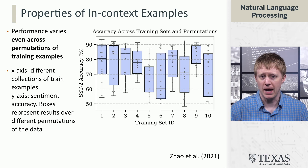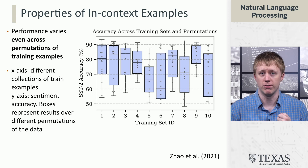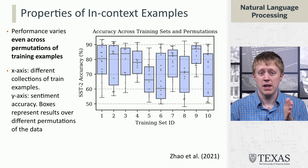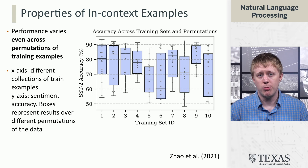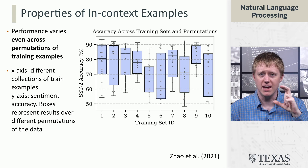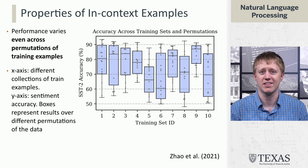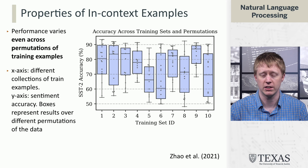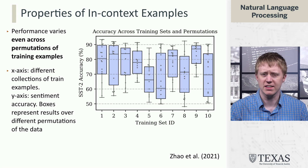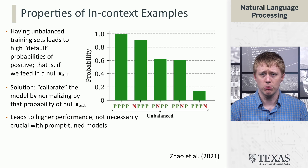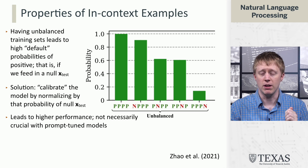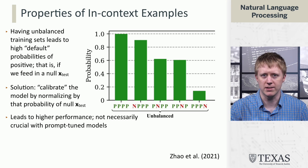Moreover, it's not just which examples you have — the order of these examples can also impact things a lot. We have here 10 different training sets, from work by Jao et al., where they took permutations of data points within those training sets and found that accuracy within the same in-context examples could range between 50% and 90% depending on ordering. The models have a high positional bias: if you give a negative example and then three positive examples, the model is very likely to think the next example is positive as well.